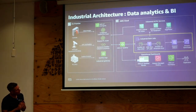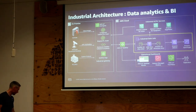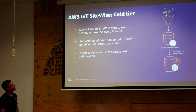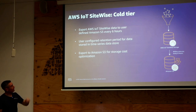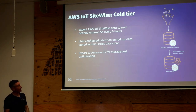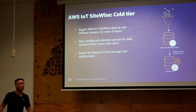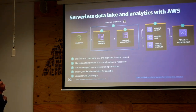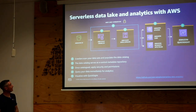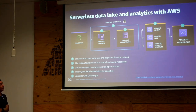For data analytics and BI, SiteWise has a feature called the cold tier to help you get data into S3. We talked about the time series database — the hot tier. The cold tier is data being exported out of that hot tier at regular intervals into S3, gradually building up your data lake to support analytics and BI. You can configure various retention settings. Once it's in S3, you can leverage Glue, Athena, QuickSight and similar services to build your analytics and BI reports.